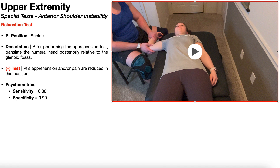The second special test in the sequence is the relocation test, which immediately follows the apprehension test. Once you perform the apprehension test and it's positive, you should not exit the test position and start over — you hold the test position to begin the relocation test.